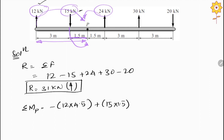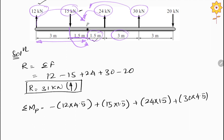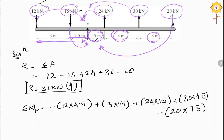The third force, 24 kilo Newton, is acting anticlockwise with a distance of 1.5 meters, so positive 24 into 1.5. The fourth force, 30 kilo Newton, is also making an anticlockwise direction about point P, and the distance is 1.5 plus 3 equals 4.5, so plus 30 into 4.5. The last force, 20 kilo Newton, acts downward making a clockwise direction about point P, with a distance of 3 plus 3 plus 1.5 equals 7.5, so negative 20 into 7.5.